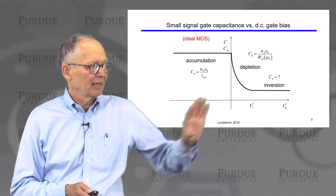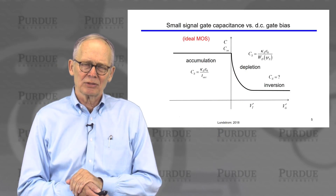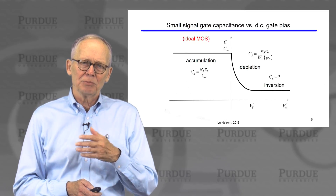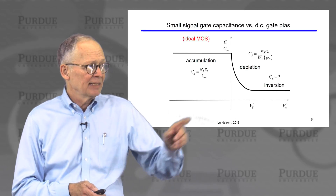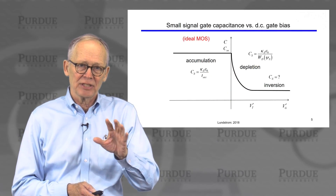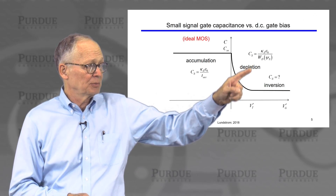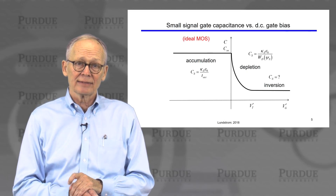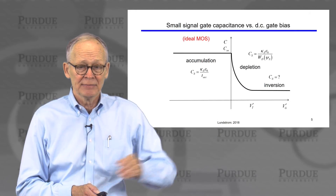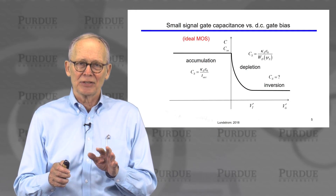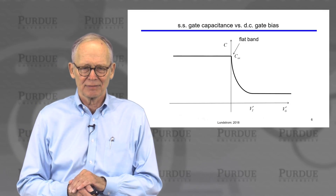As we continue to increase the DC bias, we eventually invert the semiconductor. Recall that it is hard to bend the bands by more than 2ψ_B, so there is a maximum depth achievable for the depletion region. Once we've made the semiconductor capacitance as small as possible, we have two constant capacitors in series and we see a lower, constant capacitance in the inversion regime. This occurs when the measurement is done at high frequency.